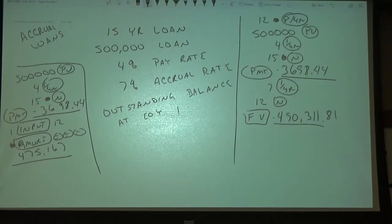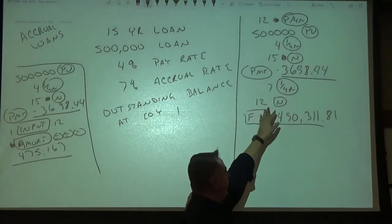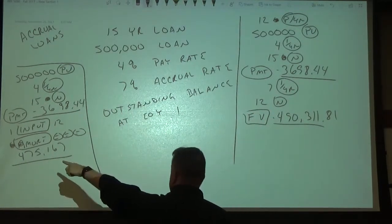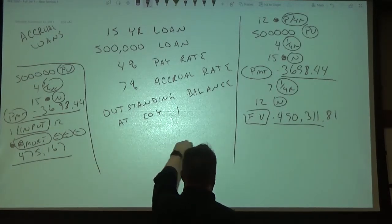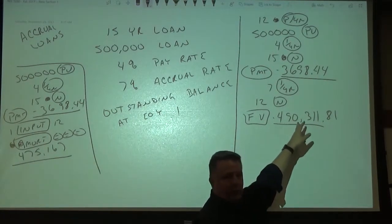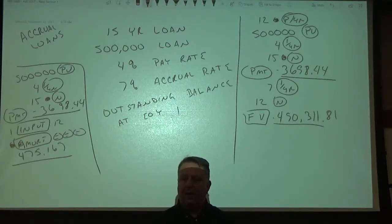Okay, so the balance would have been, if we had stuck with the 4% interest rate and our payment based upon that, our balance would have been $475,000. But because we had the 7% accrual rate over here, our balance went up by about $15,000 to $490,000. Okay, because we're obviously accruing more and more interest.